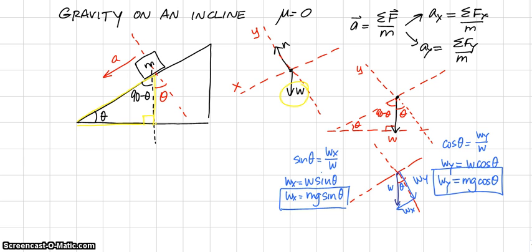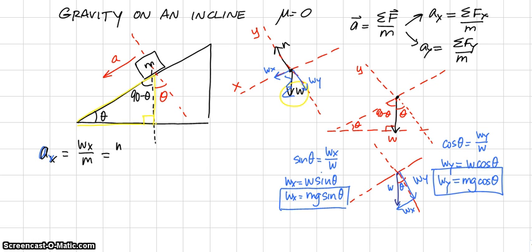Now we have the two pieces: the weight in the x-direction and the weight in the y-direction. We no longer need to worry about the original vector because we've broken it into its component parts, and we're ready to plug our vectors into the two equations. In the x-direction, the acceleration equals the only force in x — the weight in the x-direction — divided by the mass: mg sine theta over m.